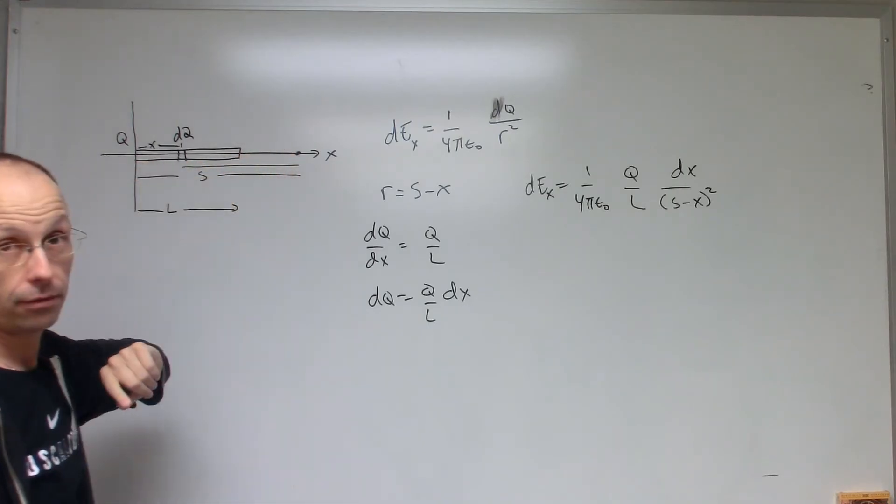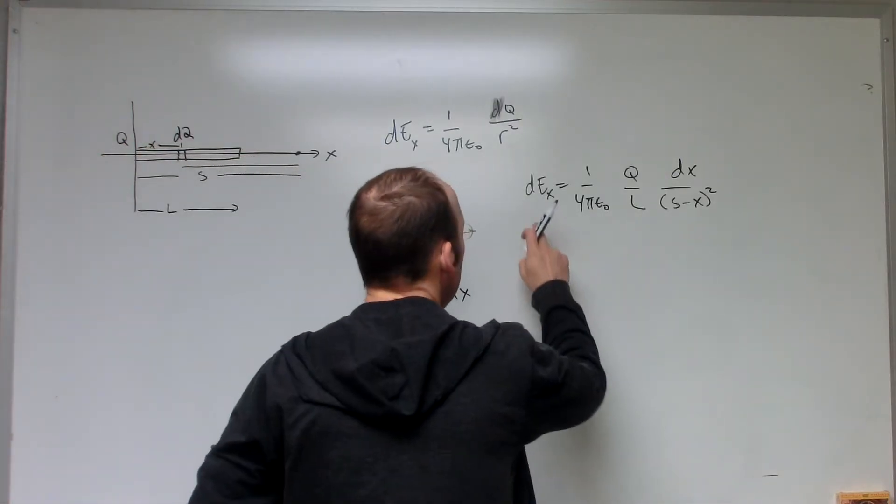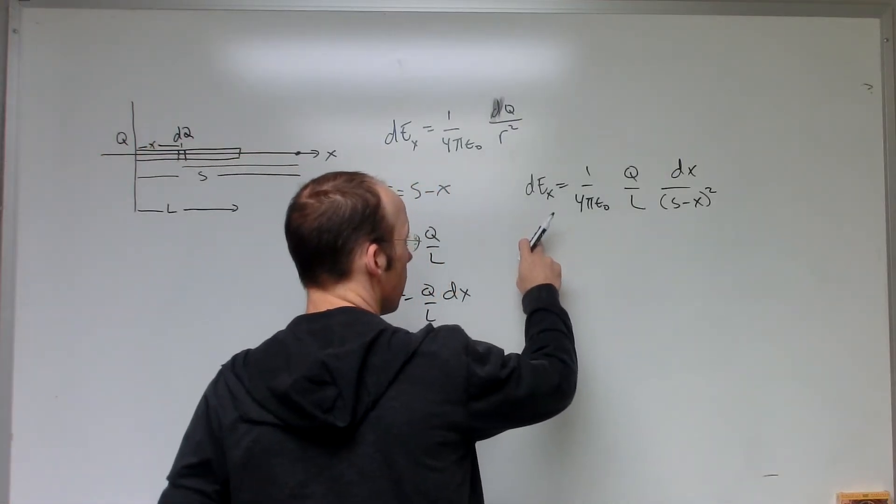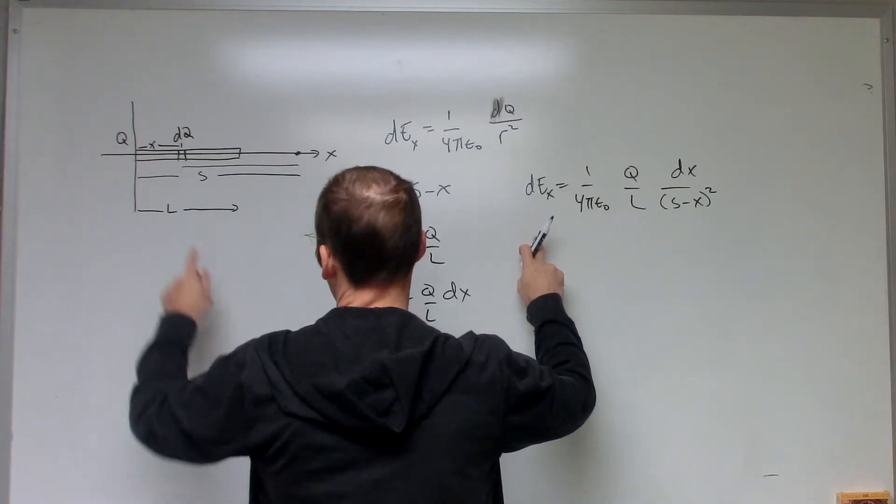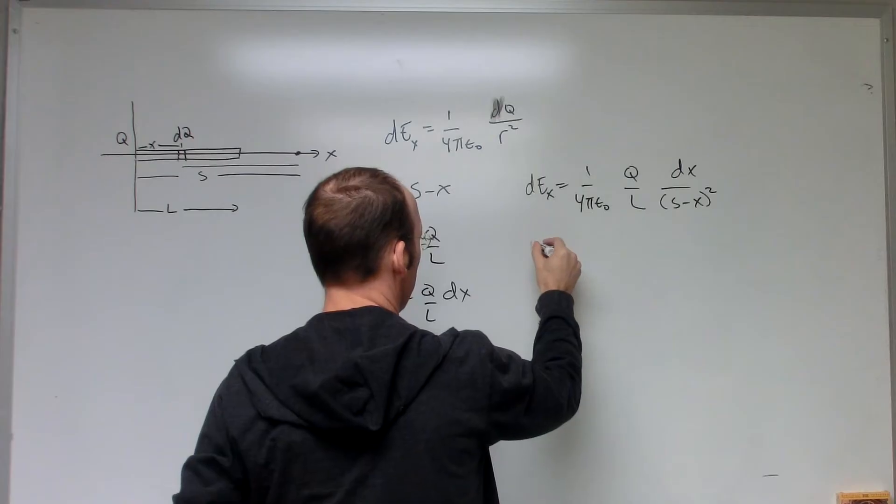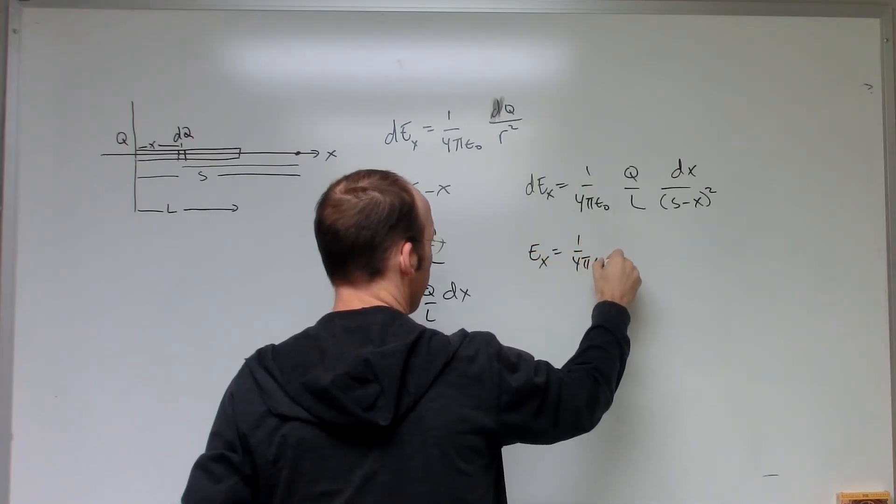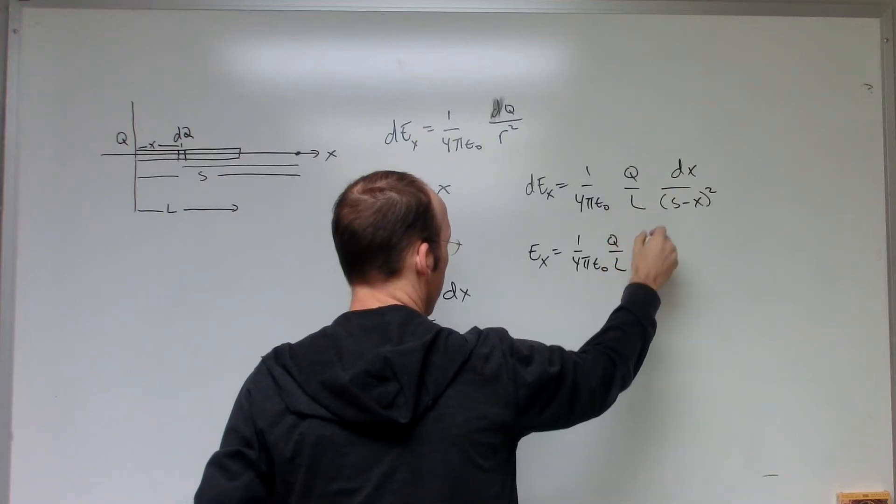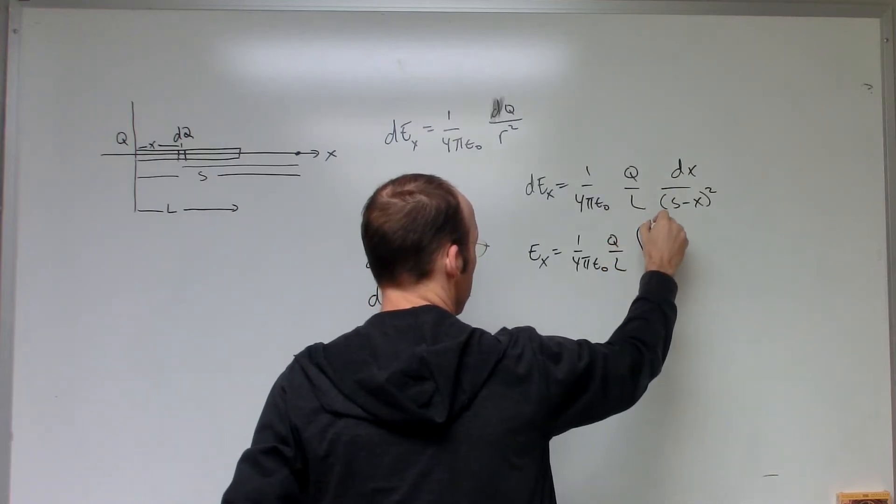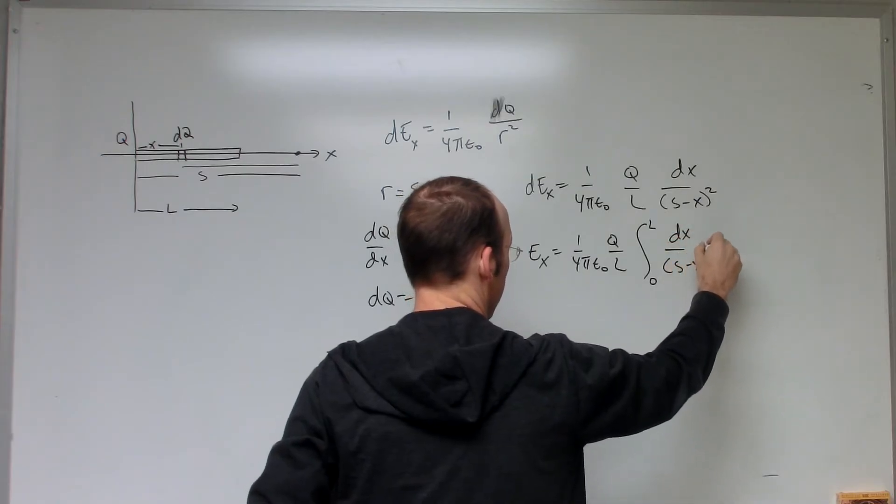But I want to find all the pieces. I want to find the electric field due to all the pieces. Okay, so I'm going to integrate. I'm going to add up from X equals 0 to X equals L. So this is going to be E_X, 1 over 4 pi epsilon naught, Q over L, 0 to L, DX over S minus X squared.